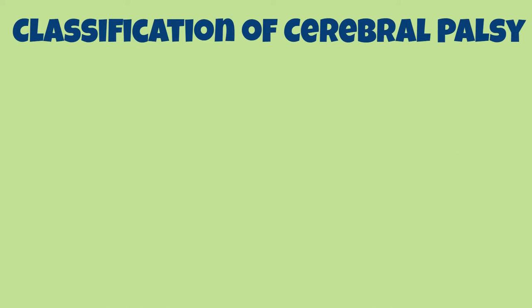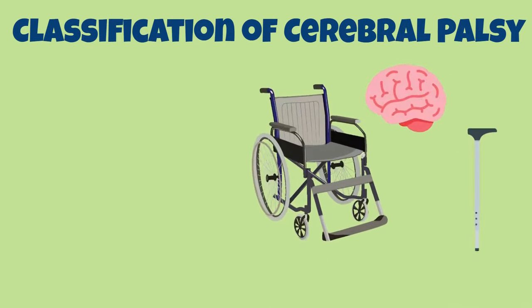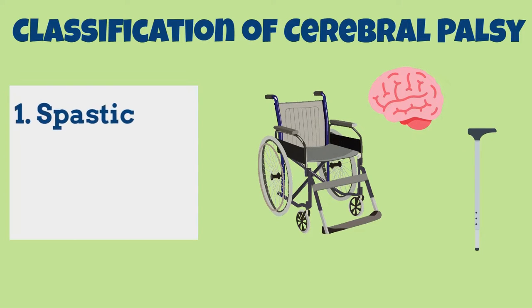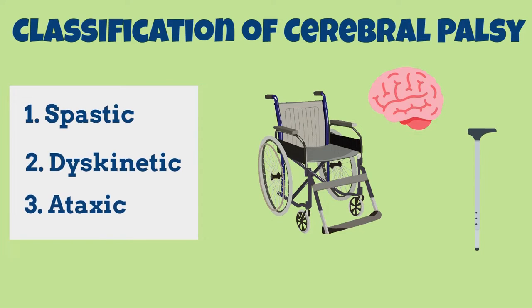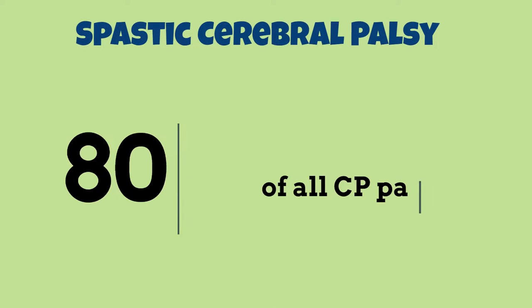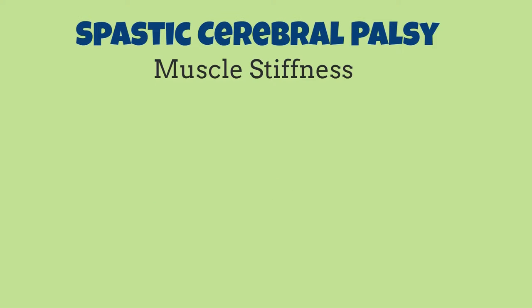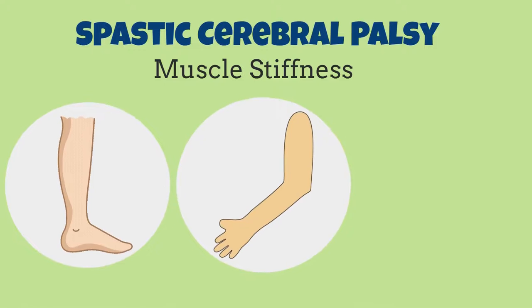Cerebral palsy can be classified based on type of motor disorder. The three most common forms of cerebral palsy are spastic, dyskinetic, and ataxic. Spastic cerebral palsy is the most common, with 80% of people with cerebral palsy having this form. Spastic cerebral palsy refers to muscle stiffness in your legs, arms, or all four limbs.